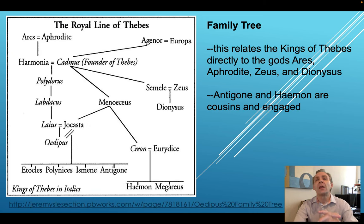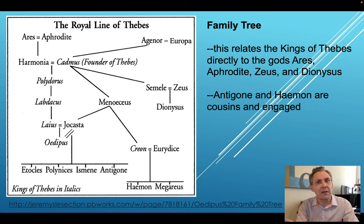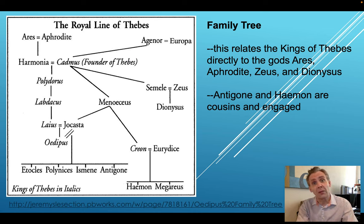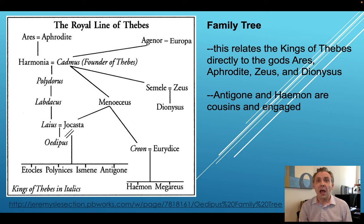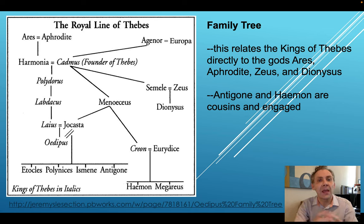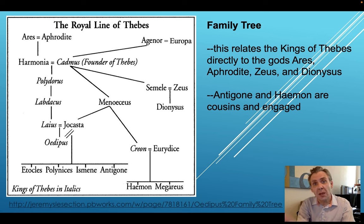In order to fully understand Antigone as a play, we need to have an understanding of the family tree of the characters involved. That means we need to know the royal line of Thebes, since we're talking about the royal king and queen and who should be ruling Thebes. Within this family tree, note that it relates the kings of Thebes directly to the gods Ares, Aphrodite, Zeus, and Dionysus. Also note that Antigone and Haman were cousins and engaged — not entirely unusual for royalty of this time period.